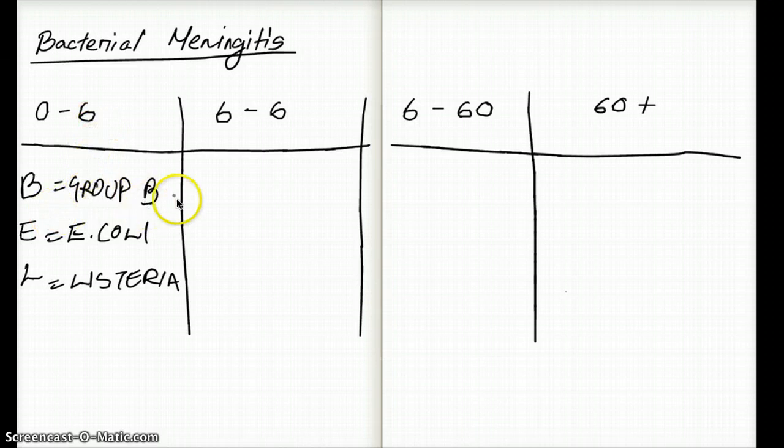I'm going to generalize some of the infections or meningitis between these three groups because there is a lot of similarity. For example, from 6 months all the way to the elderly, the most common meningitis would be Strep Pneumo.